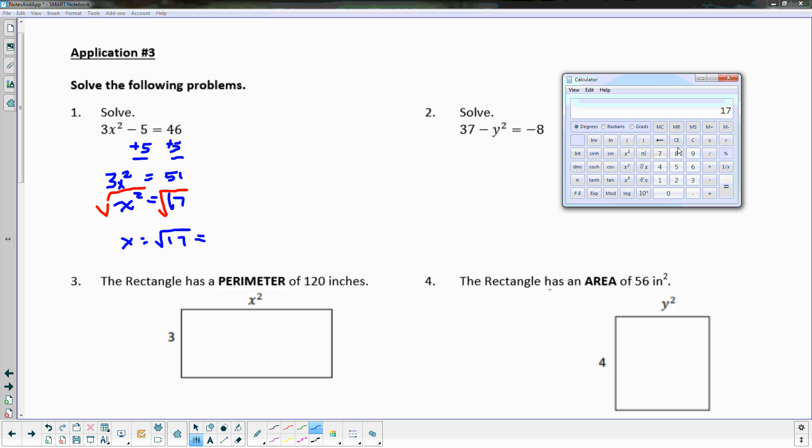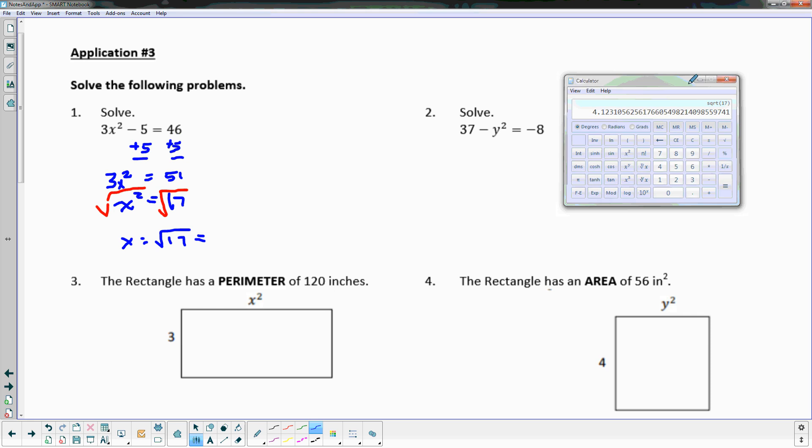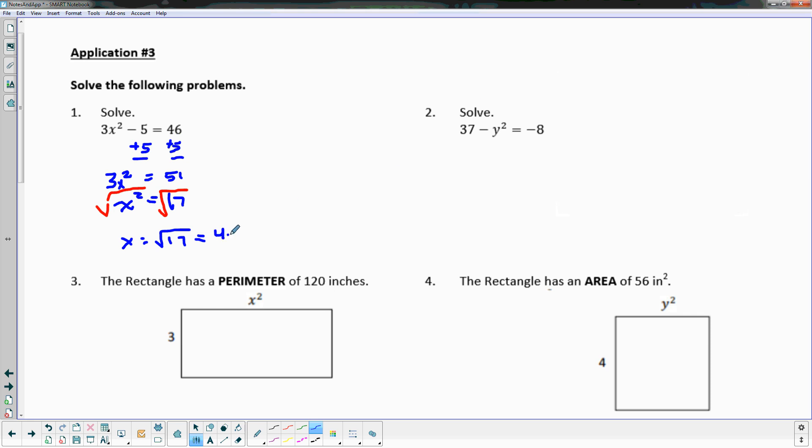Or we could actually tell what the square root of 17 is - about 4.12. The idea behind it being an application problem is that you're not getting a nice round answer there. And then again if you wish, if you want to be complete with it, you can say plus or minus 4.12. But that part's up to you. I don't expect the plus or minus, but it is technically the correct way to answer that.